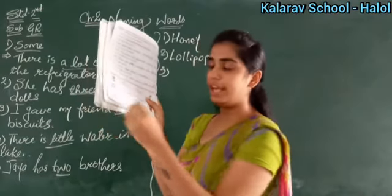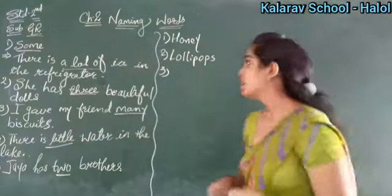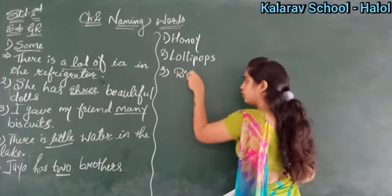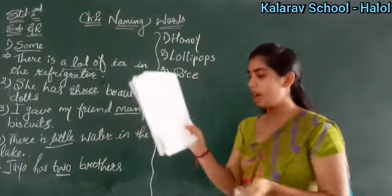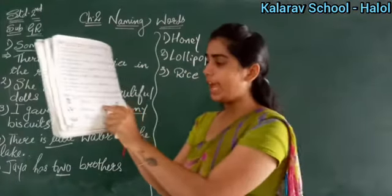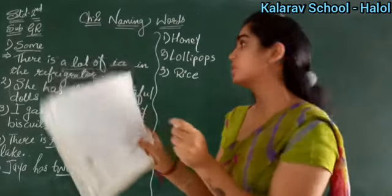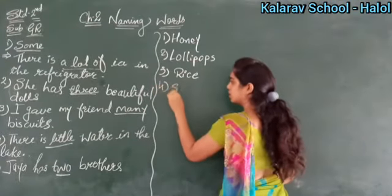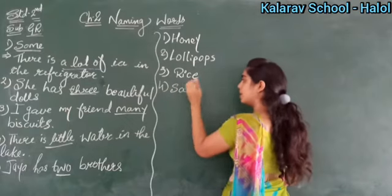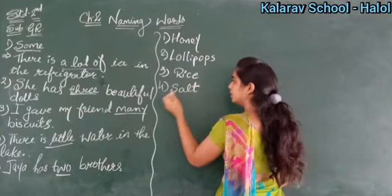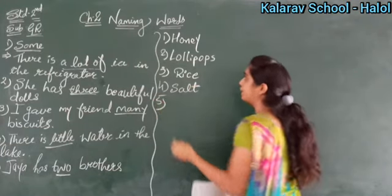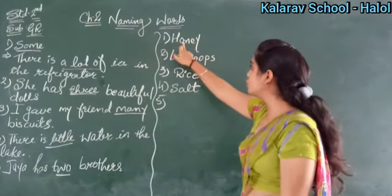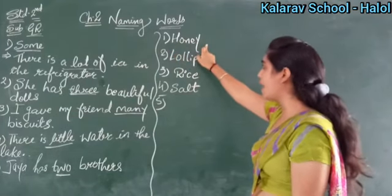Third is rice — chawal. You eat rice every day, right? Fourth is salt. Now let me go over the spellings: First is honey — H, O, N, E, Y. Second is lollipops — L, O, double L, I, P, O, P, S. Third is rice — R, I, C, E. Fourth is salt — S, A, L, T.